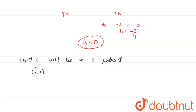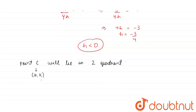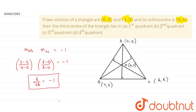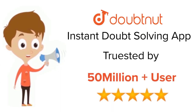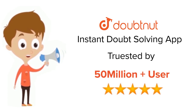H < 0 means the X coordinate is negative and K > 0 means the Y coordinate is positive. Therefore point C lies in the second quadrant, so option B is the correct answer. Thank you students. For class 6 to 12, IIT JEE and NEET level — trusted by more than 5 crore students. Download Doubtnut app today.